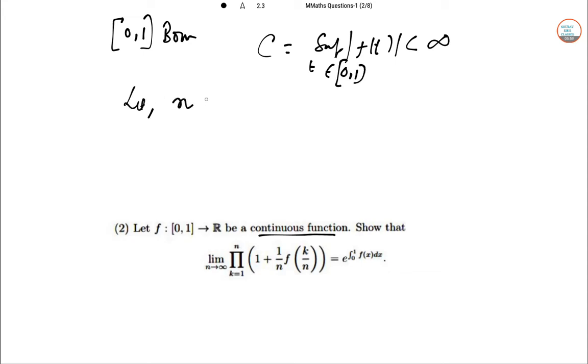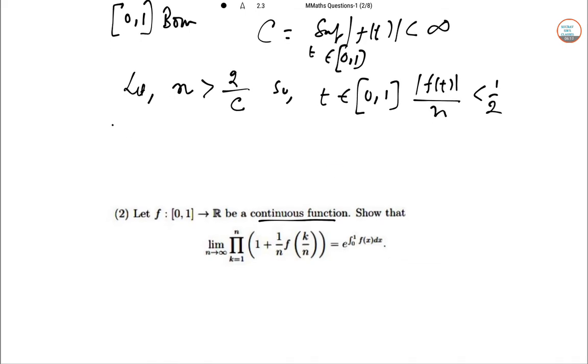Let C equal to supremum of Ft less than infinity where T belongs to [0,1]. Now let N greater than 2 by C. For all the values T belongs to [0,1] if T N less than half.